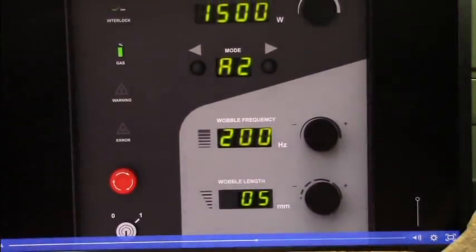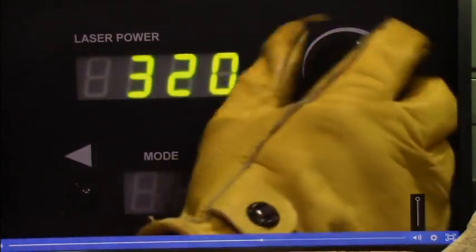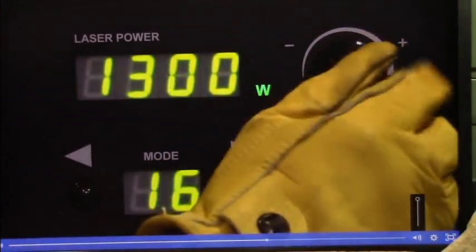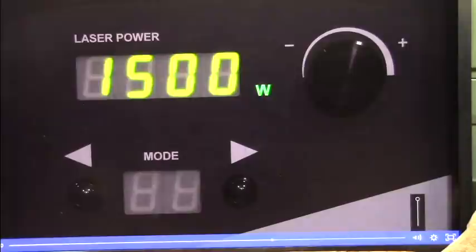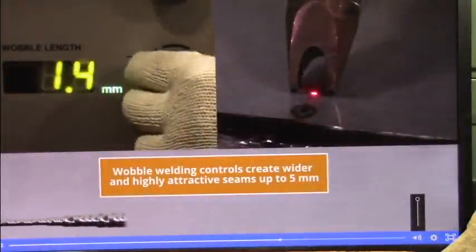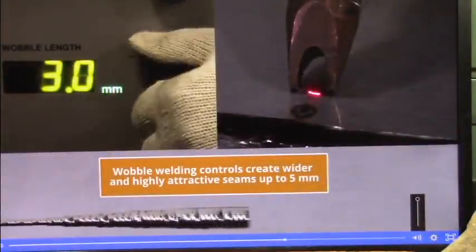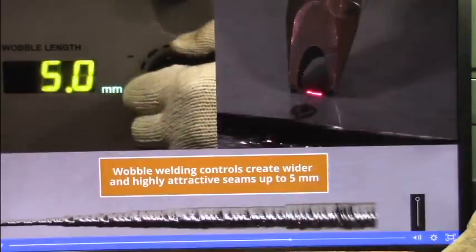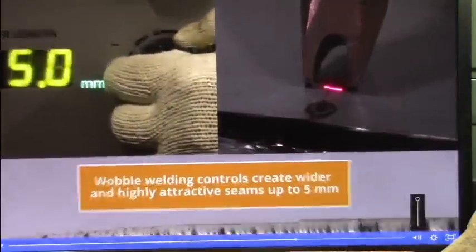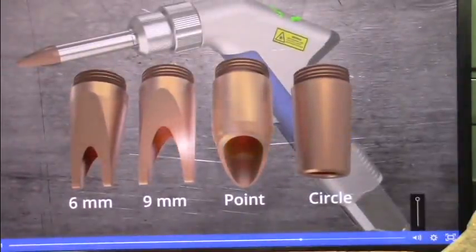Front panel controls for manual adjustments quickly dial in laser power from 150 to 1500 watts to best match applications. Wobble welding controls for frequency and width create wider and highly attractive seams up to 5 millimeters.